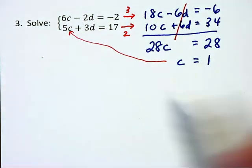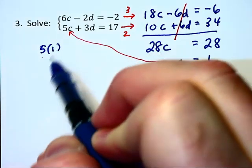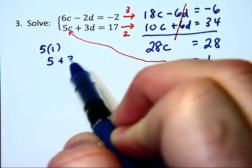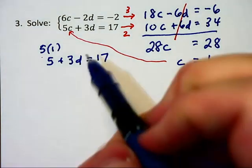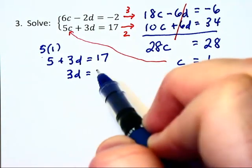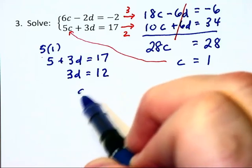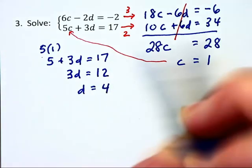That will give me 5 times 1, which basically is 5, plus 3d equals 17. Well, let's subtract 5 on each side to get 3d is equal to 12. And find out that d is equal to 4.